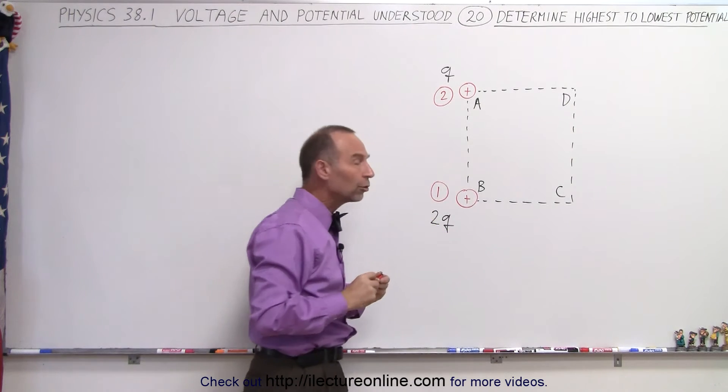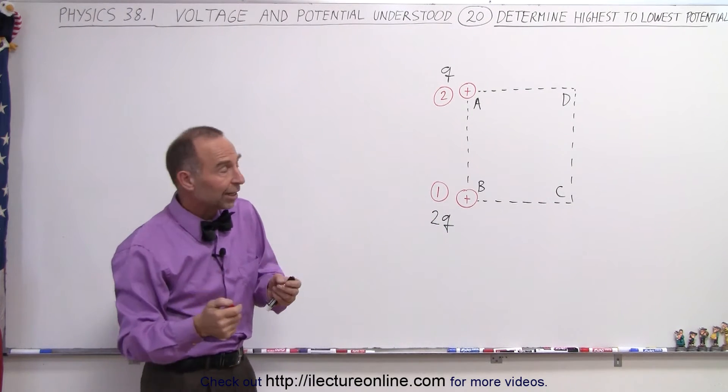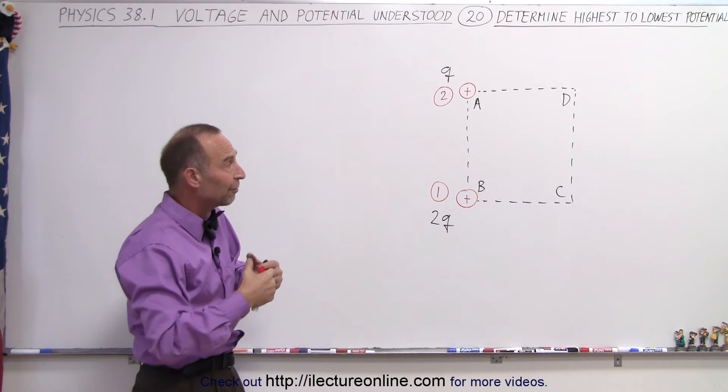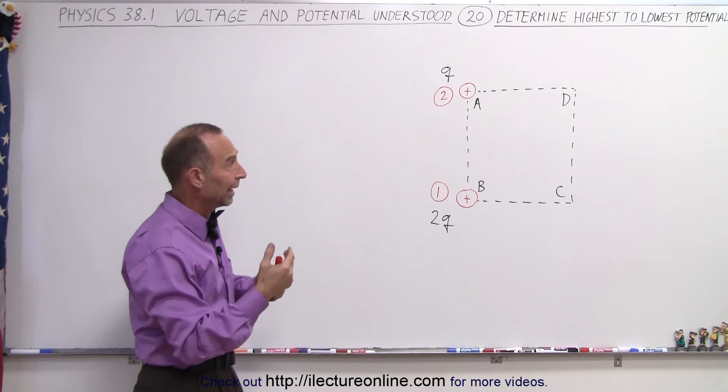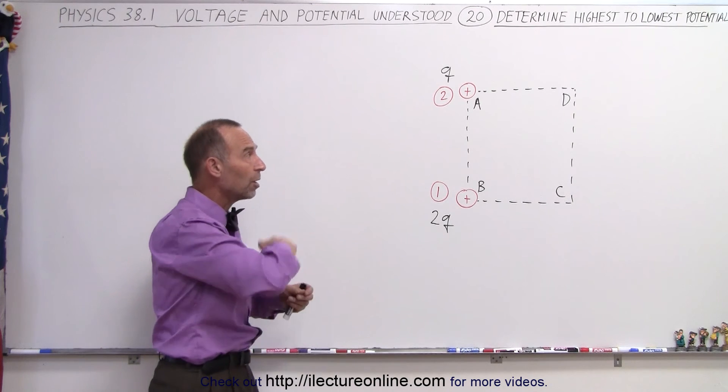But then, how do we rank the other two corners? Well, the corner that's closest to the larger charge is going to have a larger potential than the corner which is farther away from the larger charge and closer to the smaller charge.